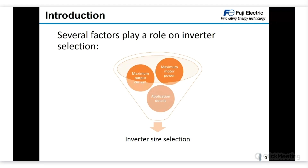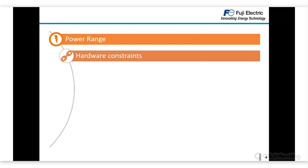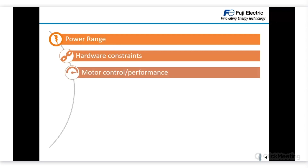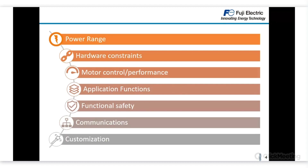For inverter model selection from the Fuji Electric portfolio, we have made a similar division of important points. We are splitting these into basically seven categories: power range, hardware constraints, motor control and performance, application functions, functional safety, communications, and customization. Now we will go in depth into each category to see which are the important points and which products are better for certain applications.